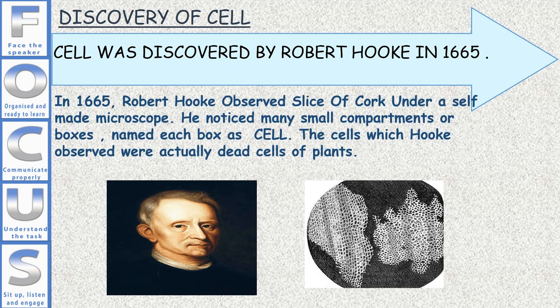In 1665, Robert Hooke observed a slice of cork under a self-made microscope. He noticed many small compartments or boxes and named each box as cell. The cells which Hooke observed were actually dead cells of plants.